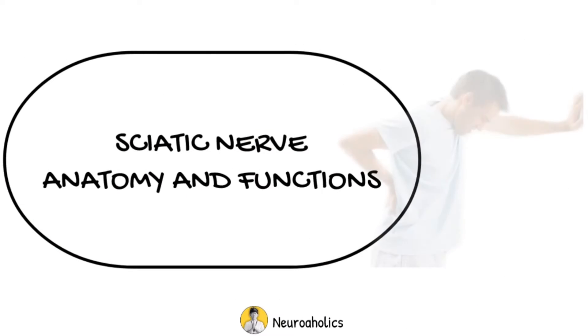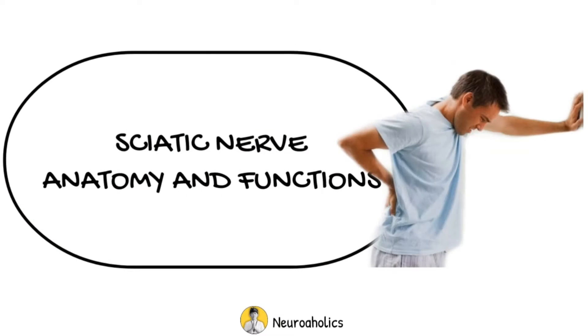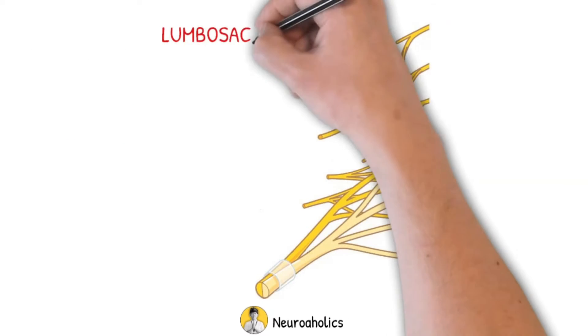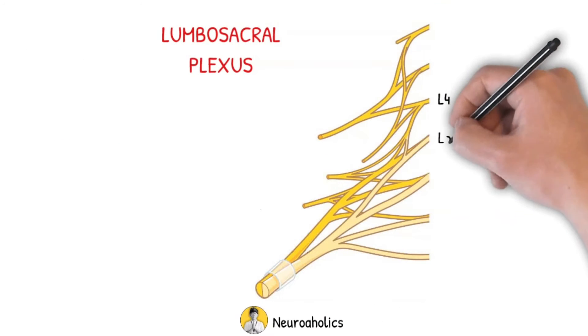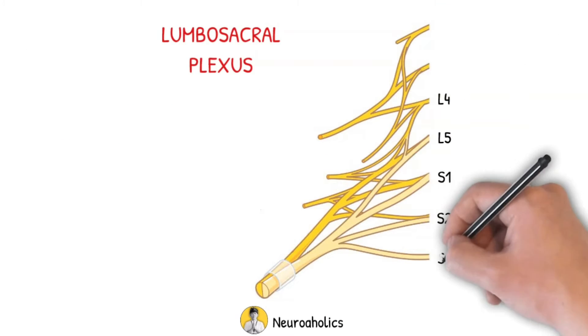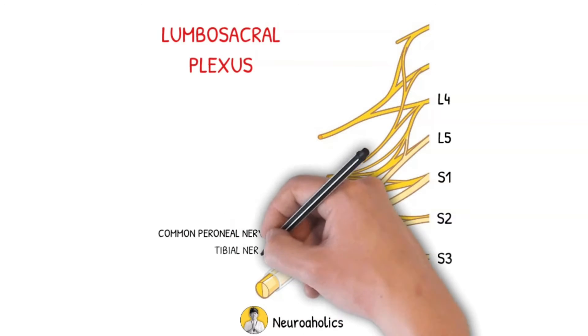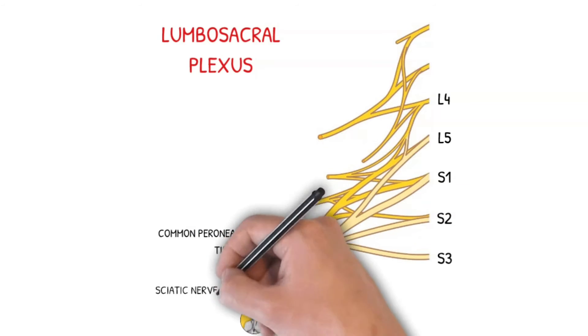Sciatic nerve anatomy and functions. The sciatic nerve is derived from the lumbosacral plexus, L4 to S3. It is a combination of the common peroneal nerve and tibial nerve.